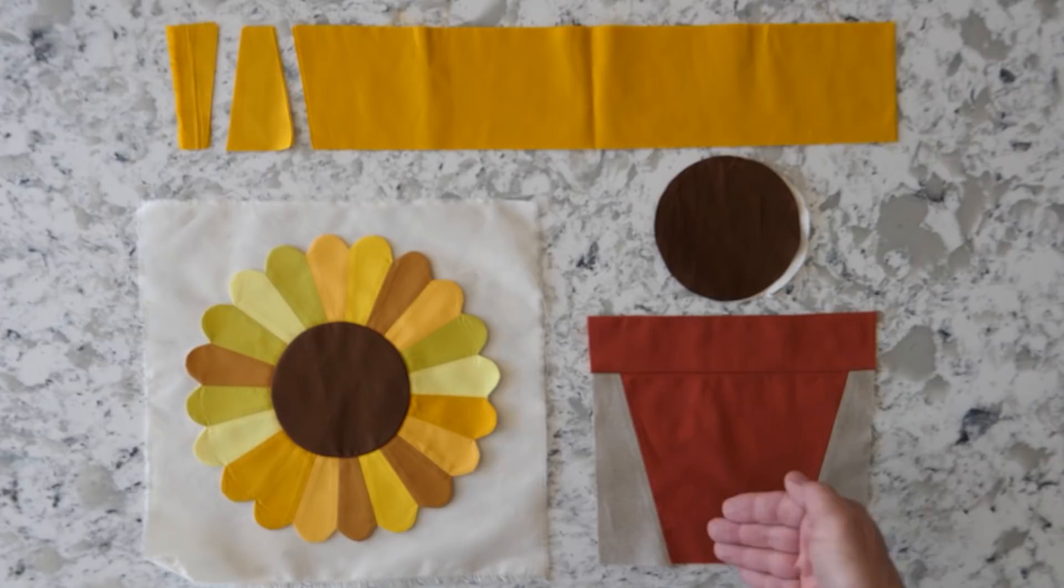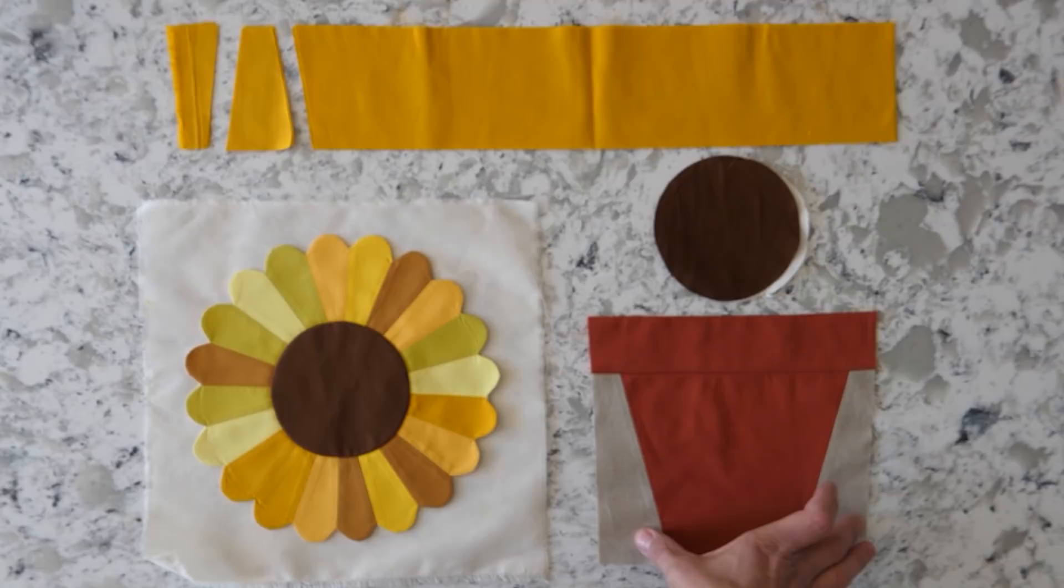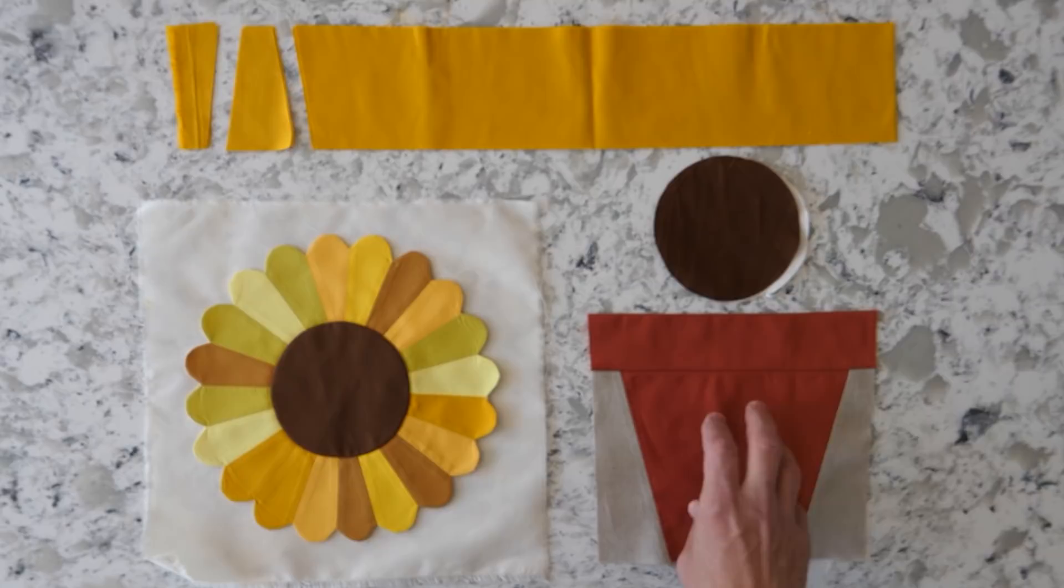To accommodate the fabric for the flower pot, it has three components. It has the top, it has the base of the flower pot, and it has the background. The top, you'll need a third of a yard. For the pot, you'll need a half of a yard. And for the background, you'll need a quarter of a yard. That will net enough for nine pots.